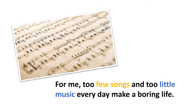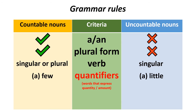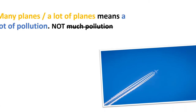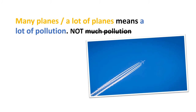Compare: 'Money is important. Dollars are green. A dollar is always a dollar.' When we talk about a small quantity, we use 'few' or 'a few' for countable nouns and 'little' or 'a little' for uncountable nouns. For example: 'Too few songs and too little music every day make a boring life.' For big quantities, we use 'many' for countable nouns and 'much' for uncountable nouns. 'A lot of' can be used with both. Note that 'much' is usually used in negative sentences and questions, but not in positive sentences. Many planes or a lot of planes means a lot of pollution, not 'much pollution.'